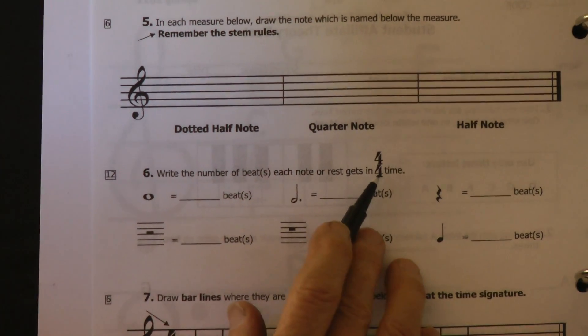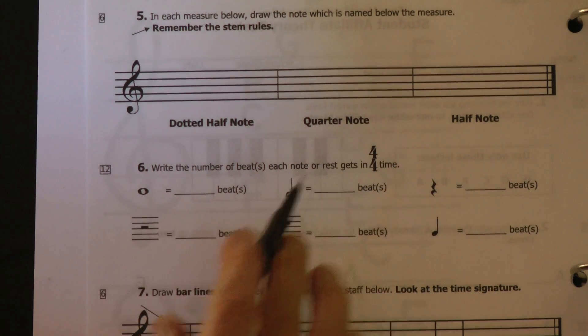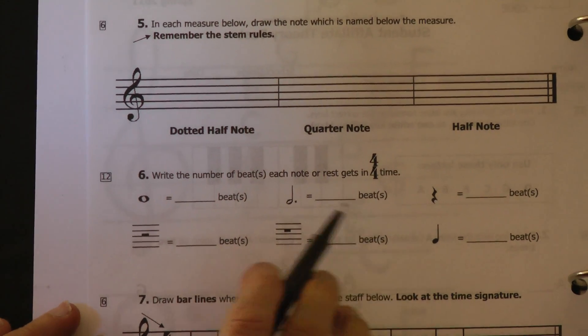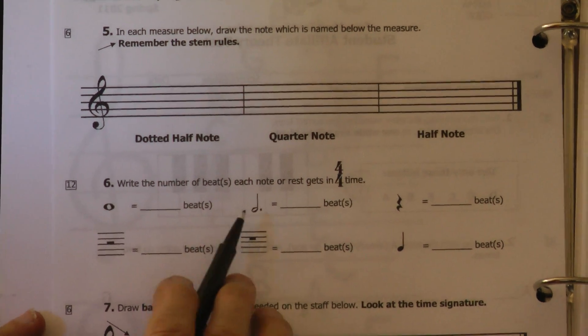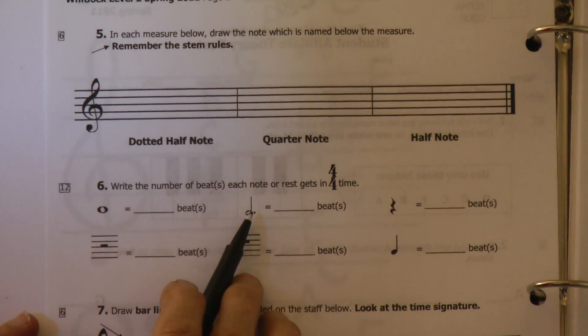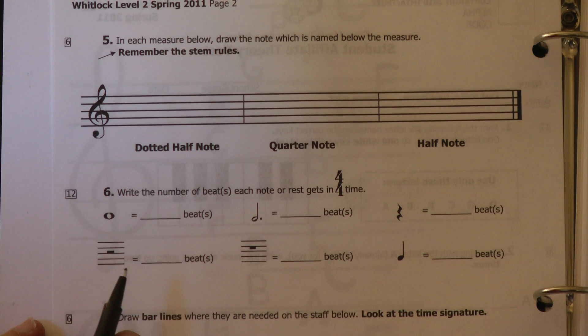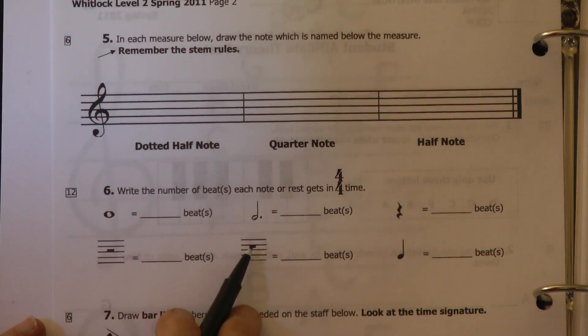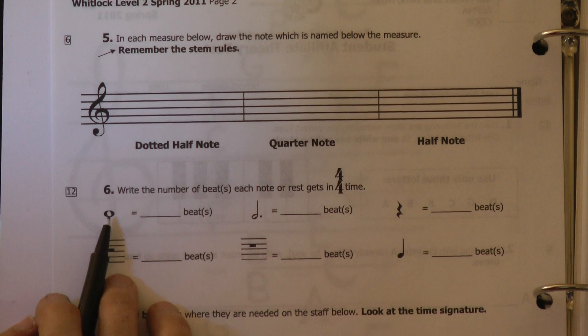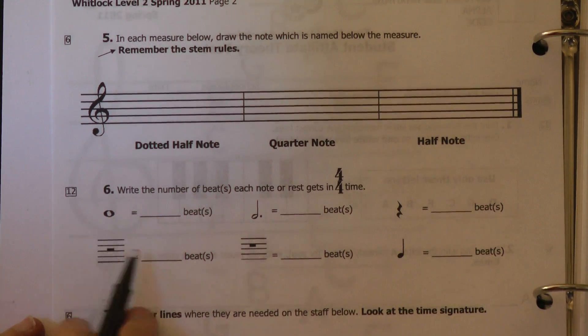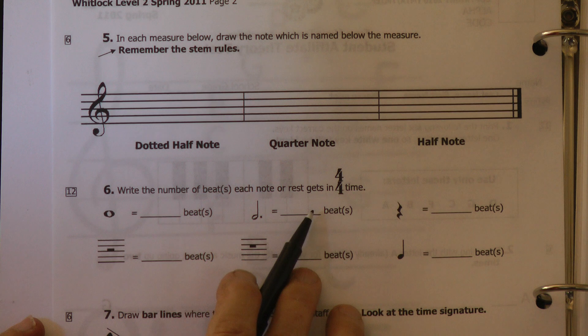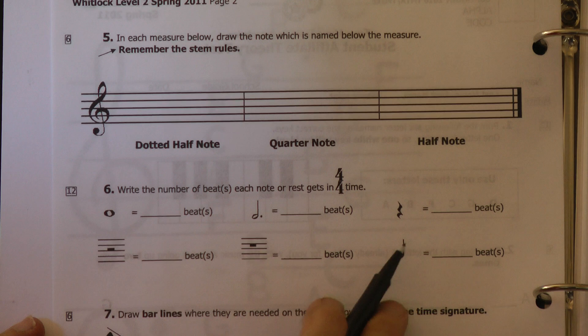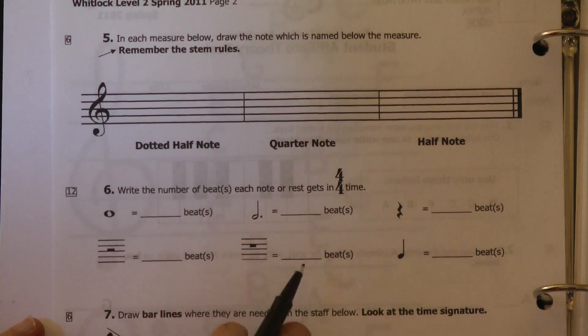Now you have to write the number of beats. Again, we're in 4-4 time. Review. How much is a quarter note? One beat. How much is a half note? Two beats. A dotted half is three. Remember, one, two, three, and whole note or whole rest, there's a whole rest, equals four. So here's a whole note, four beats. A half rest, two beats. Dotted half is three beats. A whole rest, four beats. Quarter rest, one beat. Quarter note, one beat.